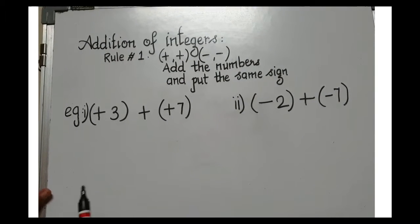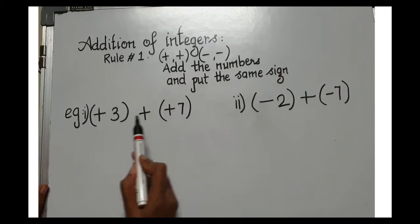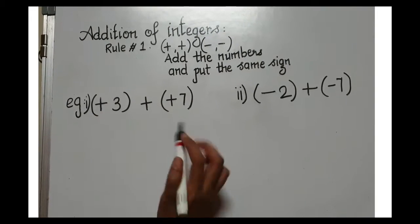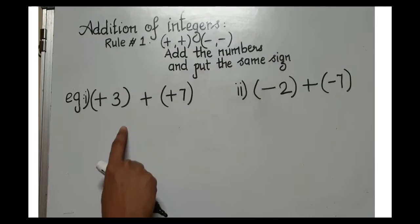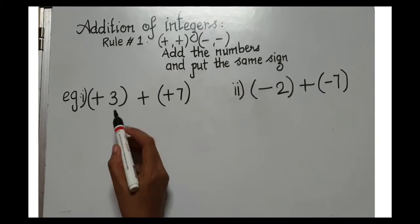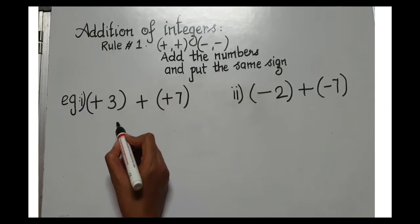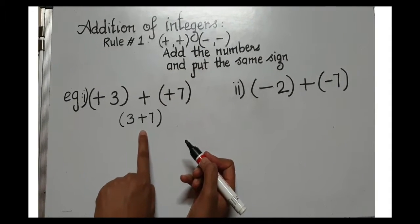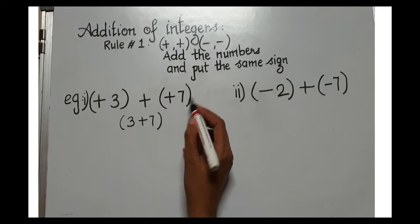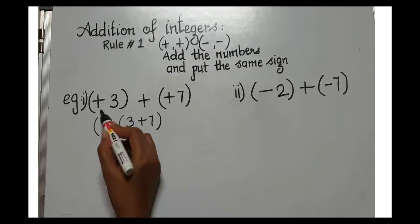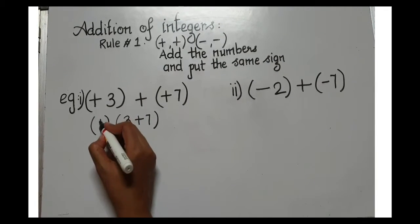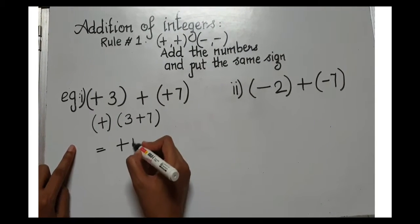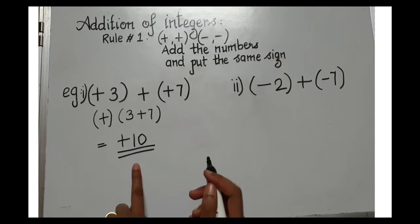I have two examples. First example: positive three plus positive seven. You have positive-positive, so rule number one applies. Add the numbers — three plus seven — and put the same sign. Since both are positive, I put a plus sign. So three plus seven is ten, and the answer is positive 10.